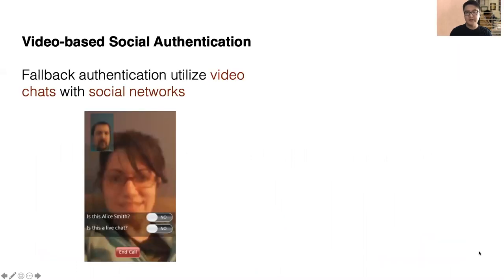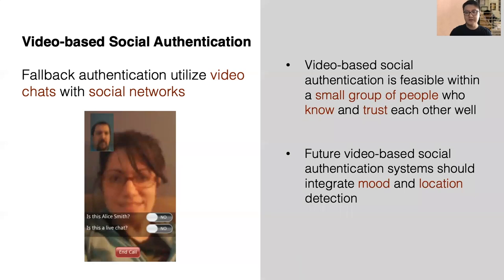So, what is video-based social authentication? Usually, we get authenticated via a combination of an account and a password, while video-based social authentication is a form of fallback authentication that gets authenticated via video chats by your social networks, like your family members or friends. We wanted to see how feasible this approach is. The key takeaways of this study are: video-based social authentication is feasible within a small group of people who know and trust each other well, and future systems should integrate mood and location detection.